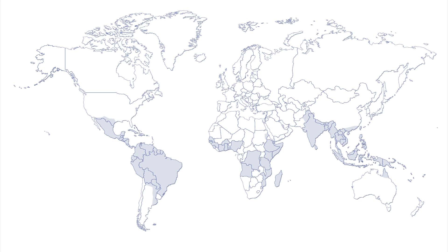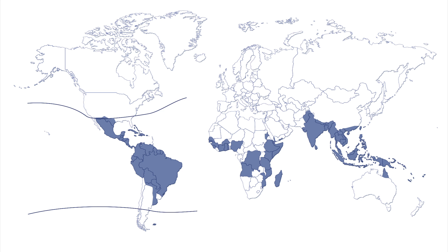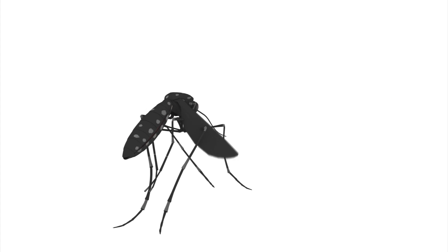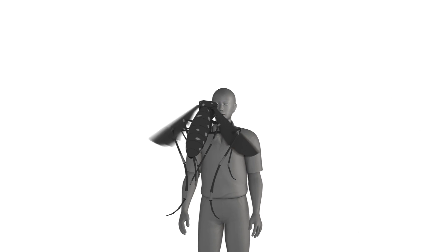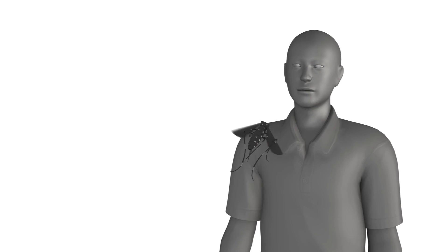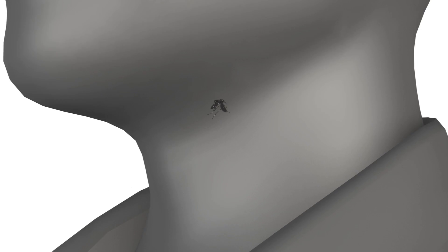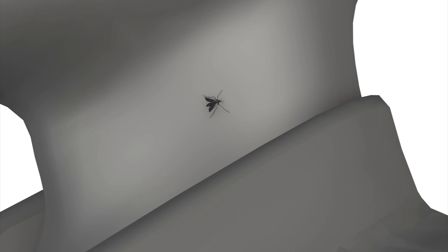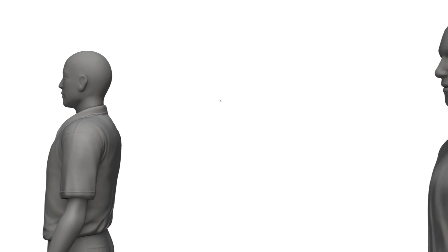Dengue fever annually infects an estimated 230 million people around the equatorial regions. The dengue virus is transmitted when an Aedes aegypti mosquito sucks blood from an infected person, then goes on to bite another person.